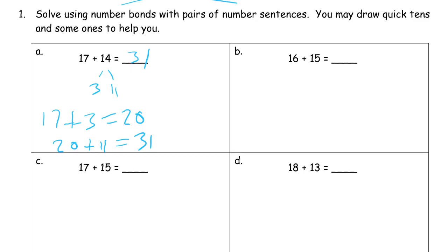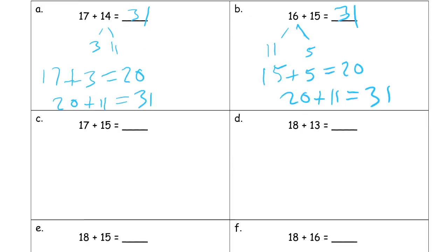There, and now looking at 16 and 15. I can do the same thing here and make this a 5 to go with that 15 and make it 20. And then that would leave 11. So I'd have 15 plus 5. 31 again.